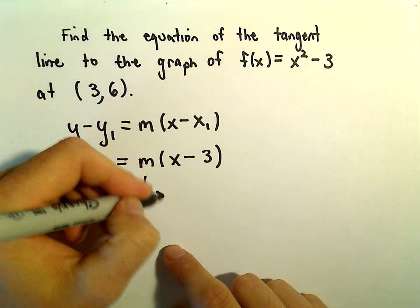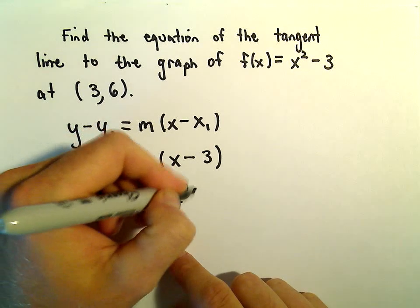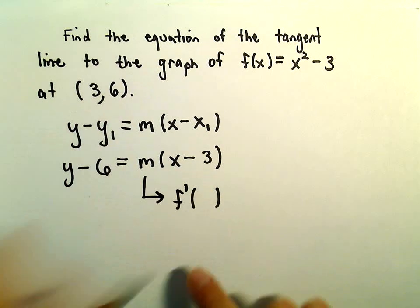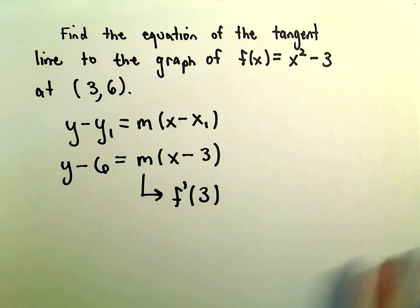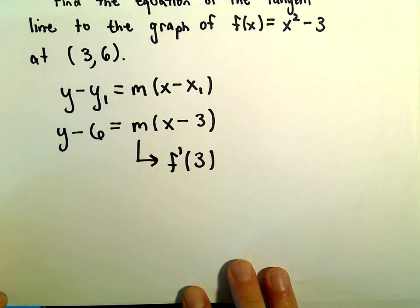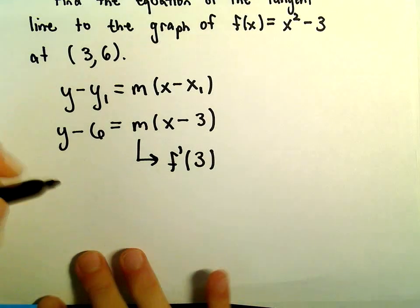To find the slope, we take the derivative and plug in the x-coordinate, which is 3. The long part here is computing the derivative, so let's do that.